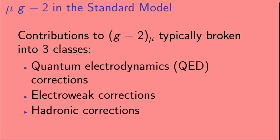The contributions to muon G minus 2 are typically broken into three classes: the quantum electrodynamics (QED) corrections, the electroweak corrections, and the hadronic corrections. In order to understand why the contributions are broken into these three classes, let's first take a very quick tour of the standard model.